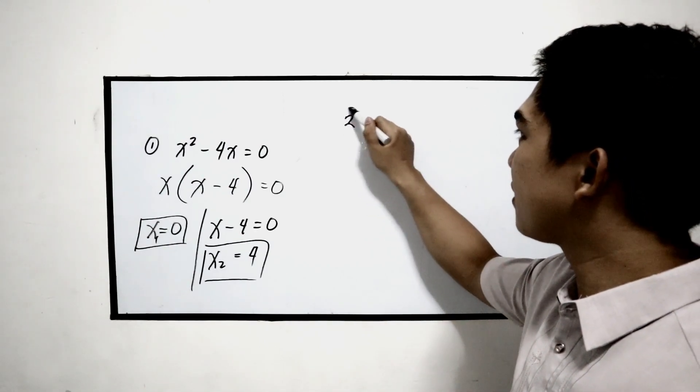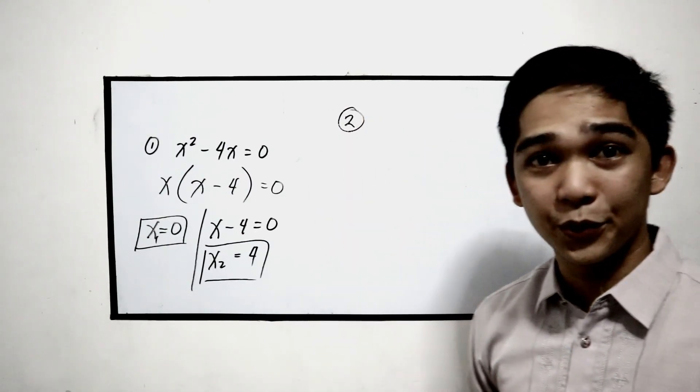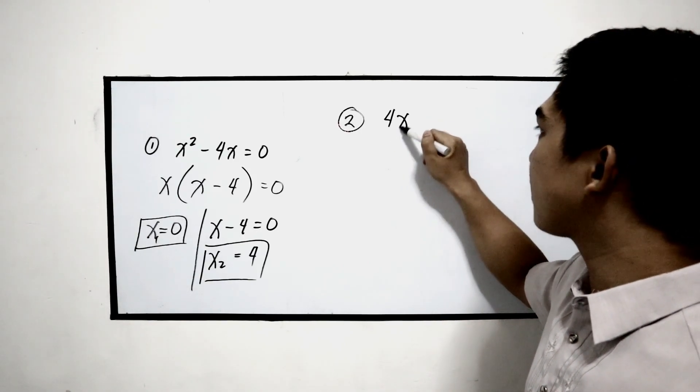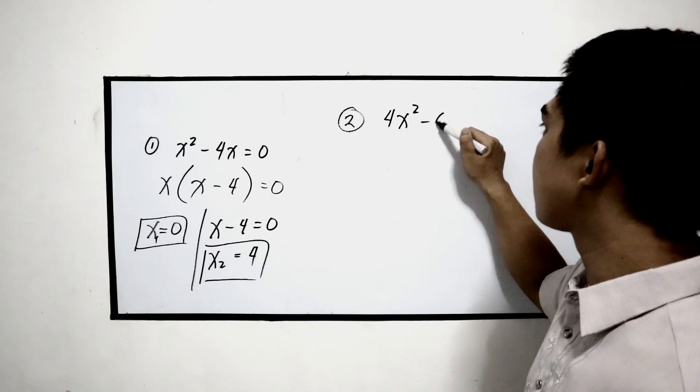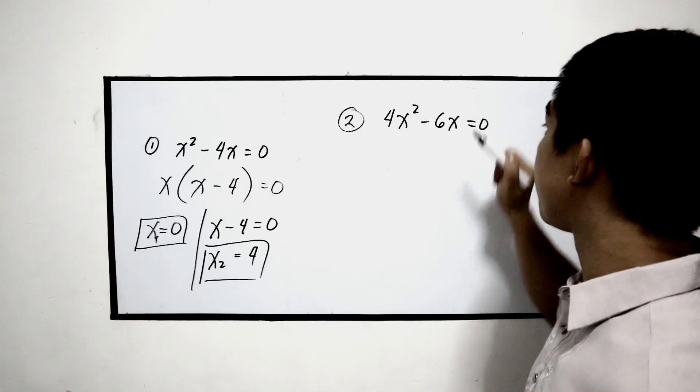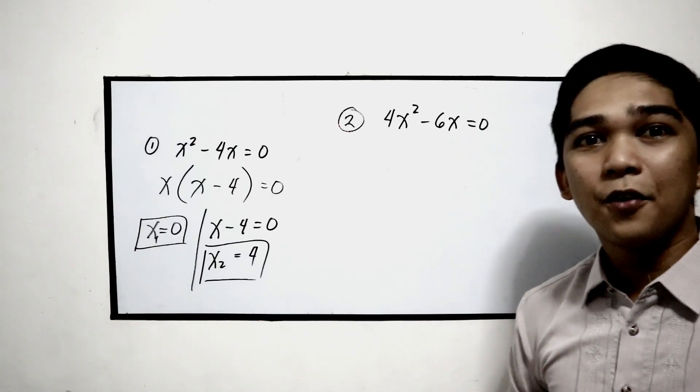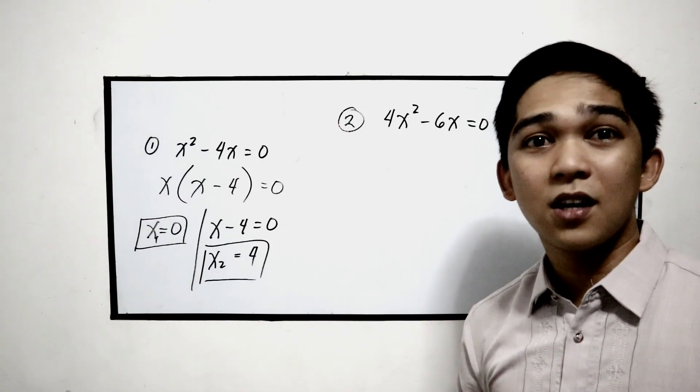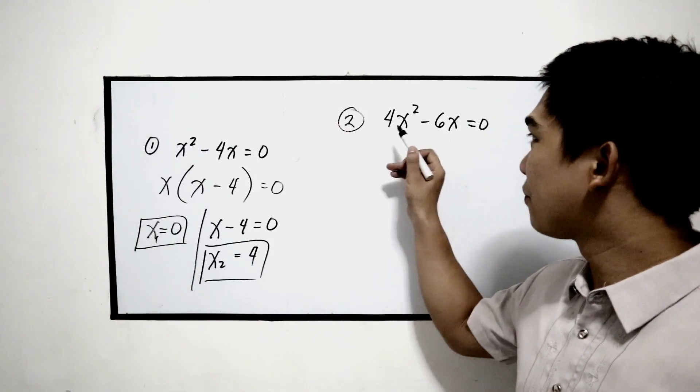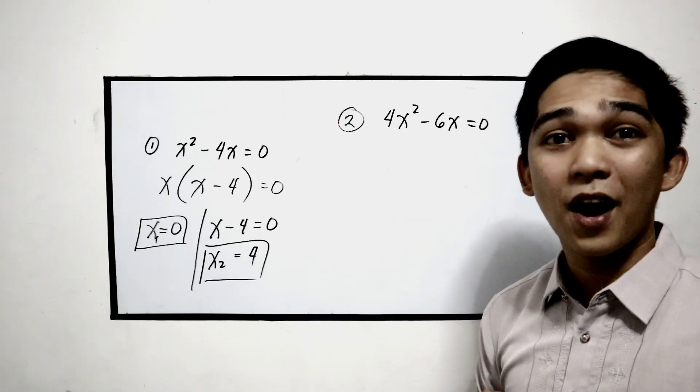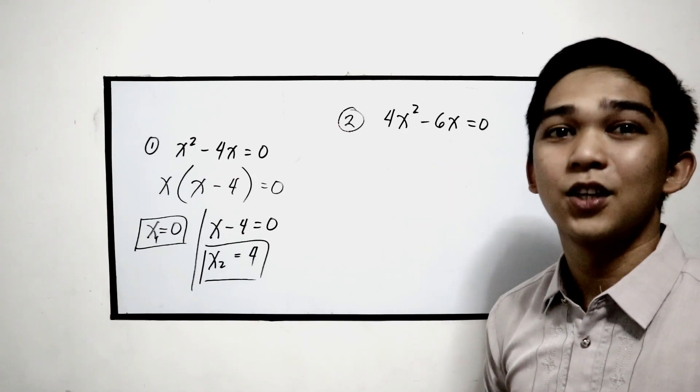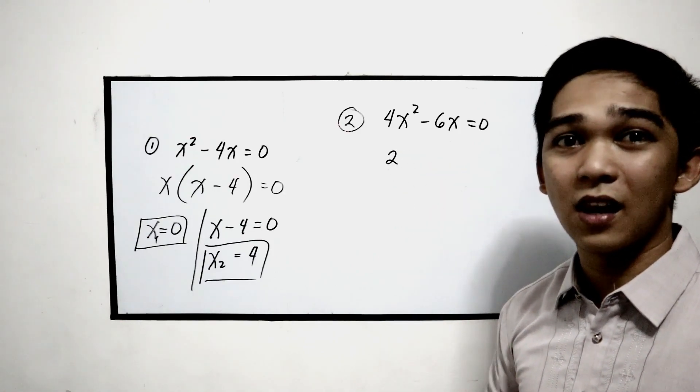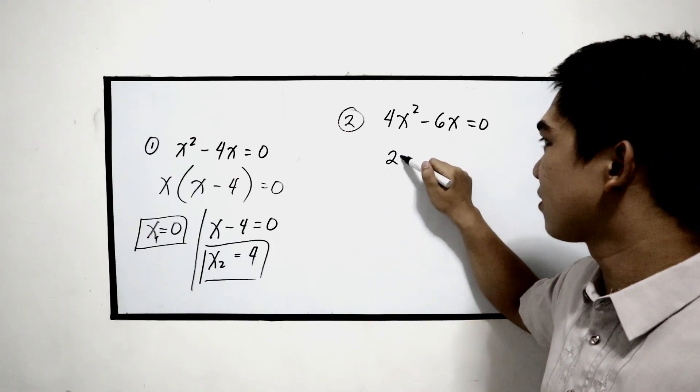To further understand, let's have example number 2. Let's say we have 4x squared minus 6x equals 0. Find the common factor. Let's start with the coefficient. 4 and 6, what is the common factor? 2. And for the variable, the lowest exponent is x. So copy x.